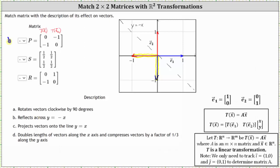Now let's take a look at transformation matrix S. The first column is (1/2, 1/2), which is the transformation of the vector E sub one. Let's go ahead and graph the vector (1/2, 1/2) in blue. The initial point would be at the origin and the terminal point would be at the point (1/2, 1/2), this point here. This is the transformation of the vector E sub one. The second column is also (1/2, 1/2), which is the transformation of the vector E sub two. So the transformation of E sub two in red is the same vector, (1/2, 1/2).